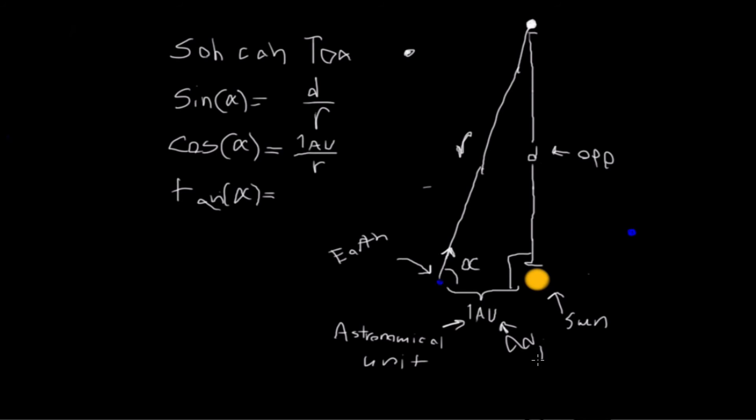I'm just going to write adjacent and opposite. And that's important. That's D over 1AU. And we know 1AU, which means we only have one unknown, and we do care about D. D is the important one.